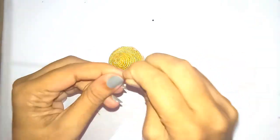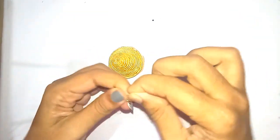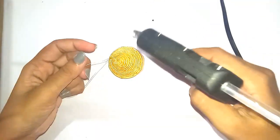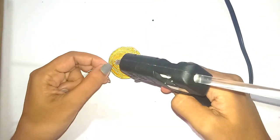Fold it from the center and put a knot at one end of the thread. After putting the knot, you can fix the thread on top of the bell using hot glue.